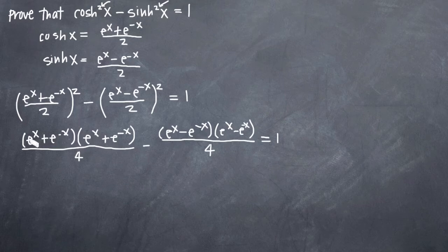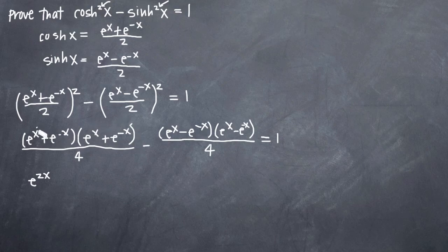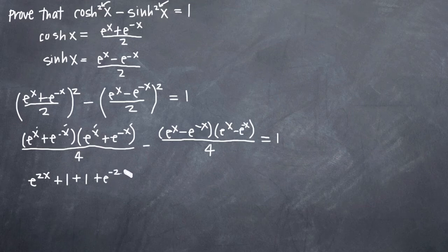So now we're just going to FOIL this. We're going to multiply e to the x by e to the x, then e to the x by e to the negative x, and so on. Keep in mind that when multiplying these exponential terms with base e, you're adding the exponents. So e to the x times e to the x gives us e to the 2x. When we multiply e to the x by e to the negative x, we add x plus negative x to get 0, and e to the 0 is 1, so we get plus 1. Similarly, e to the negative x times e to the x gives e to the 0, which is 1. And e to the negative x times e to the negative x gives us e to the negative 2x.